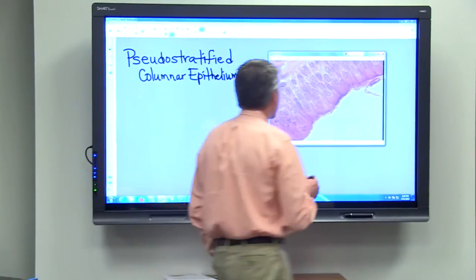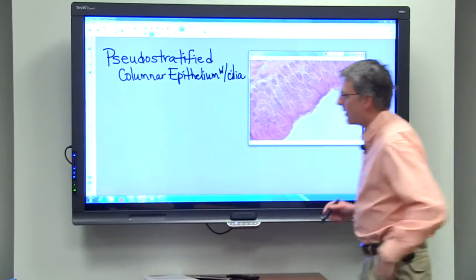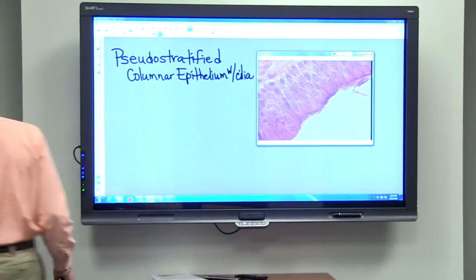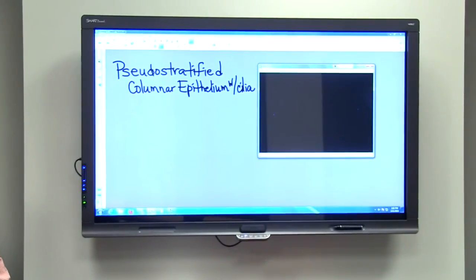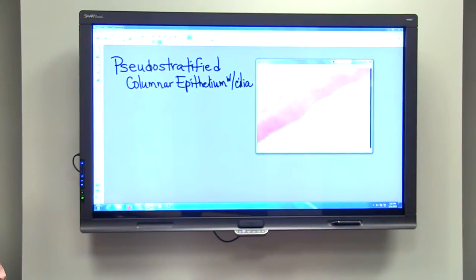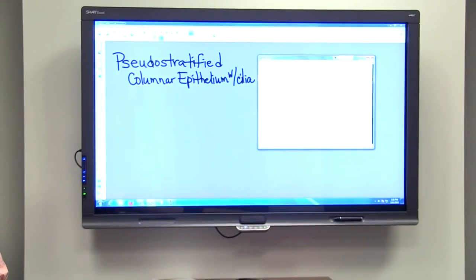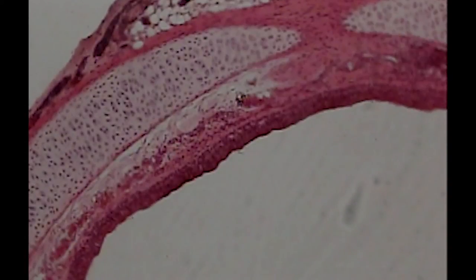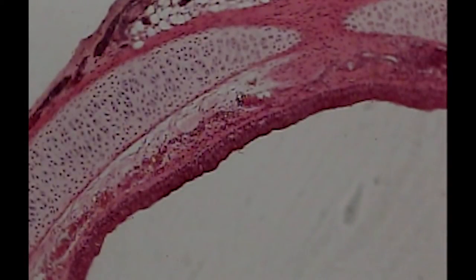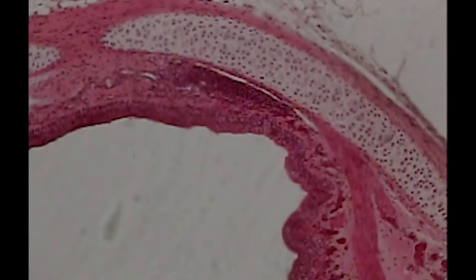It's a little hard to make out on this particular slide. If I drop back, you can get oriented a little better perhaps. Here you can see that we have a trachea.